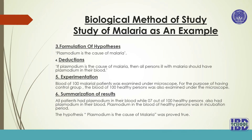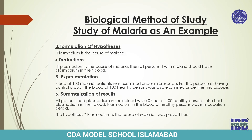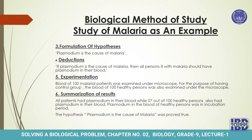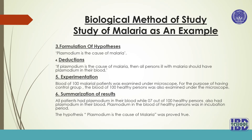Third step — formulation of hypothesis: the hypothesis made for malaria was that plasmodium is the cause of malaria. Deductions were: if plasmodium is the cause of malaria, then all persons ill with malaria should have plasmodium in their blood. As you can see, this deduction uses the if-then logic.